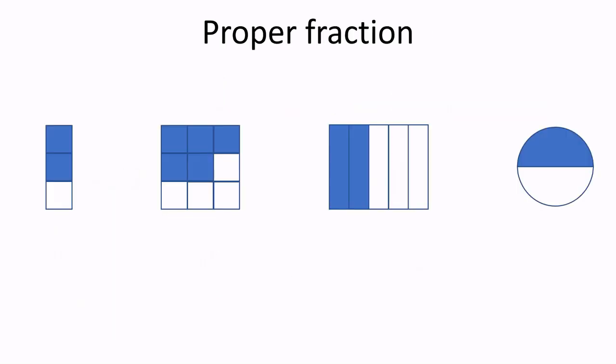Let's practice and write the shaded part of each diagram as a proper fraction. Here, we have two pieces shaded out of a total of three equal pieces. So, we will write two above the fraction bar — the numerator — and we will write three at the bottom — the denominator — as we have a total of three squares.